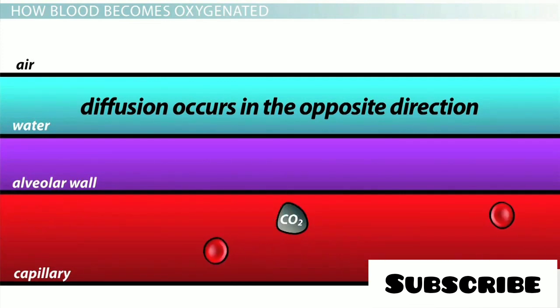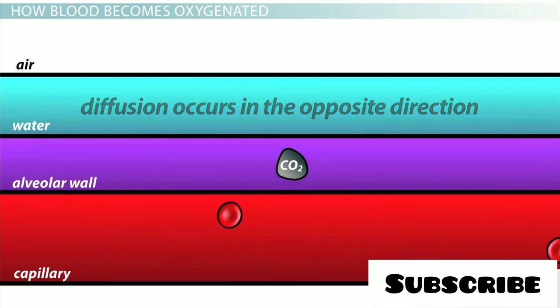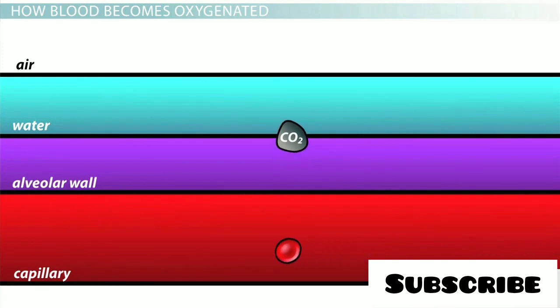Carbon dioxide diffuses out of the capillaries, into the alveoli, into the thin layer of water, and then quickly exits into the air.